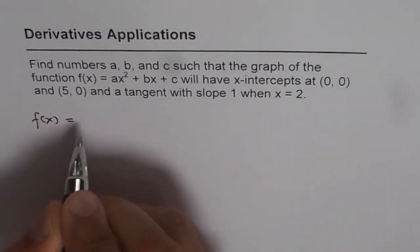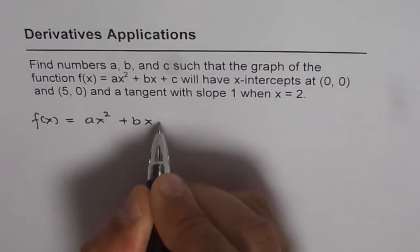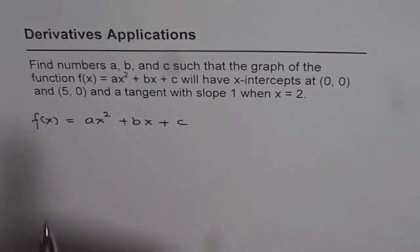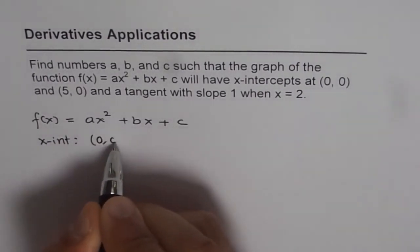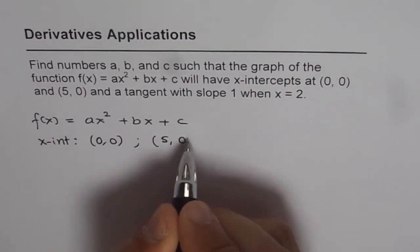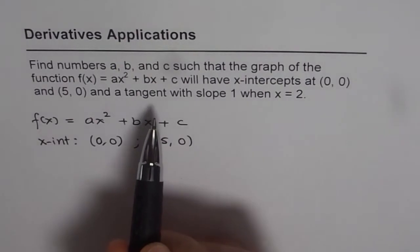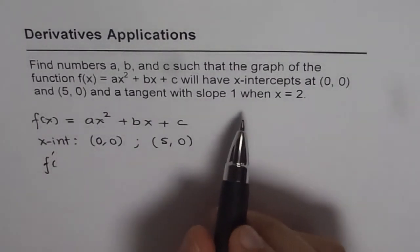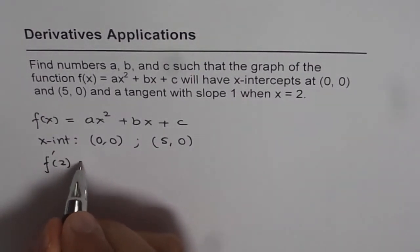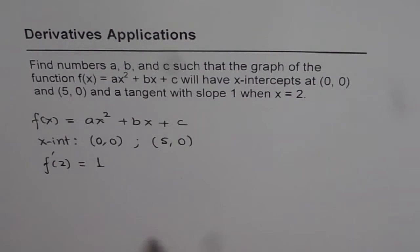So what we are given here is a function which is f(x) = ax² + bx + c and what we need to find is value of a, b, and c and we are given three conditions. So these three conditions should give us three equations and using those three equations we should be in a position to find out these three numbers.